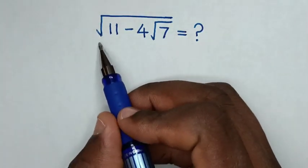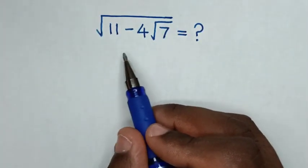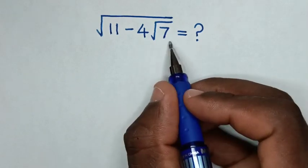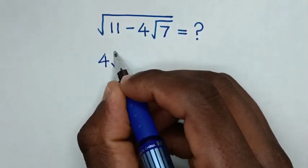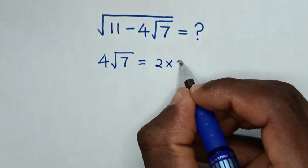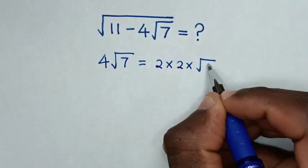Hello, how to solve square root of 11 minus 4 square root of 7. So, from here, 4 square root of 7 is equal to 2 times 2 times square root of 7.